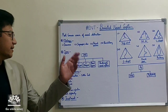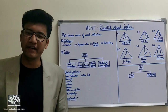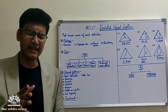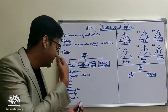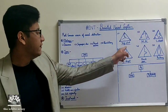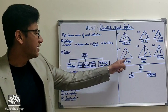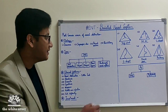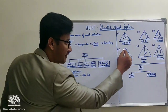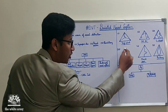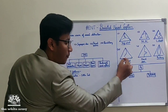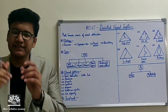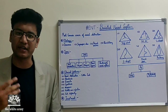In S-shaped deviated nasal septum, as the name suggests, the septum is deviated in an S-shaped manner. The importance of this is that it obstructs both nasal vestibules — that is, both nares.